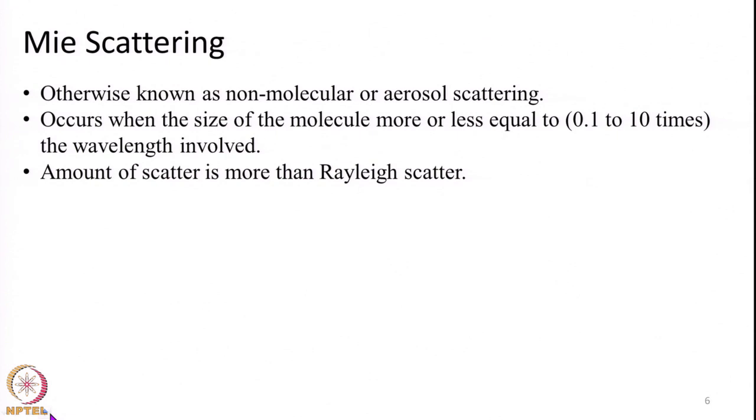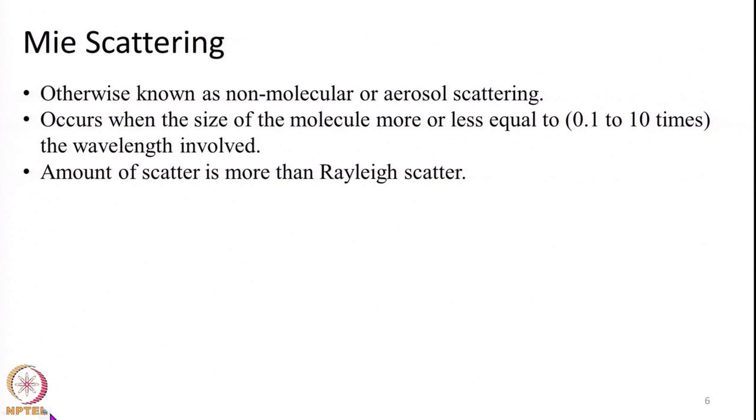Mie scattering, also known as aerosol or non-molecular scattering, occurs when the size of the particle is between 0.1 and 10 times the wavelength involved. Dust and smoke in the atmosphere are the primary causes. Mie scattering has much higher intensity than Rayleigh scattering — as seen during a dust storm where vision is severely impaired due to large amounts of scattered energy.